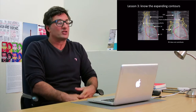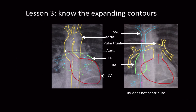The third lesson is to know your outline. It's quite difficult to teach without a picture, so I'll show you some anatomical structures that make up the outline. You can see that the aortic arch — whether the ascending or descending aorta — makes up part of the cardiac outline. The left atrium is a small segment of the cardiac outline, and the left ventricle as well.